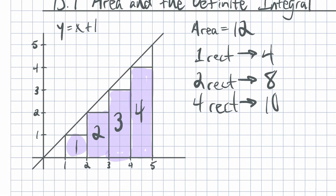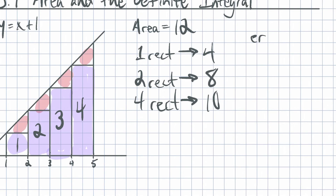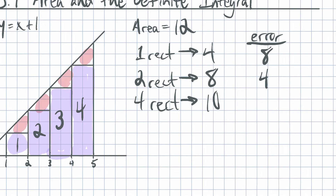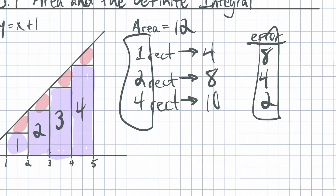We are missing two units with four rectangles. The error using one rectangle is eight units. The error using two rectangles is four. Using four rectangles, the error is two. Whenever I double the number of rectangles, I cut the error in half—going from eight error to four error to two error.